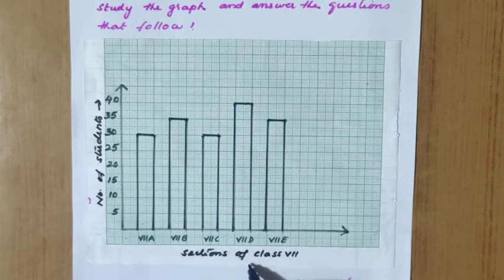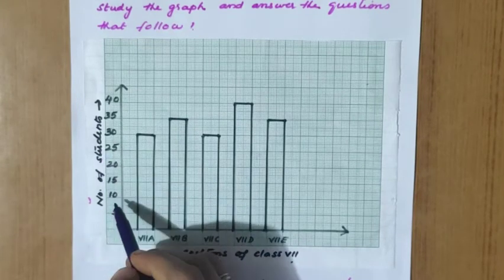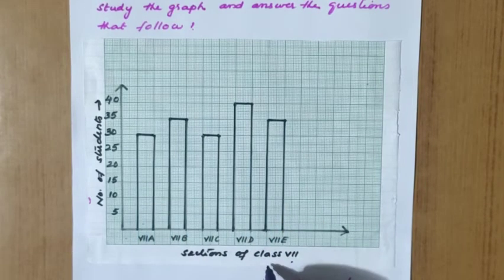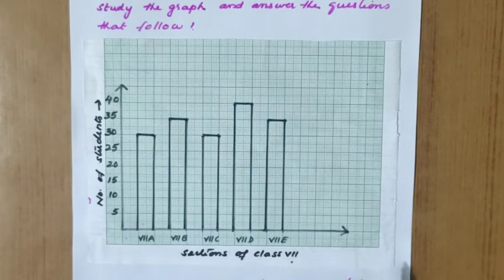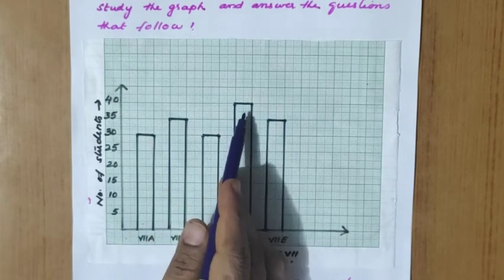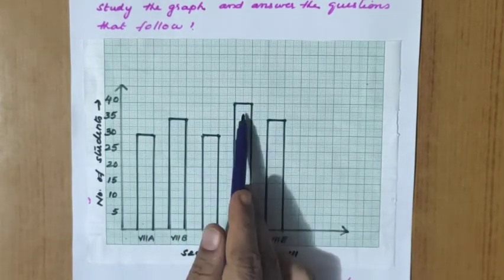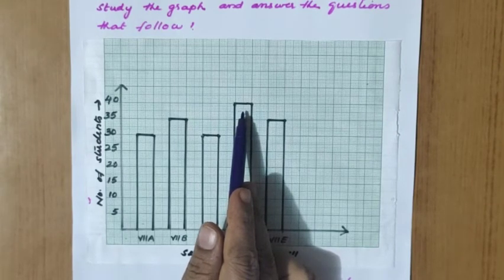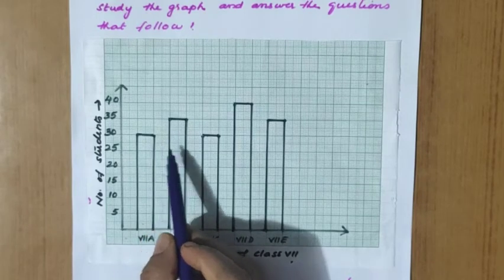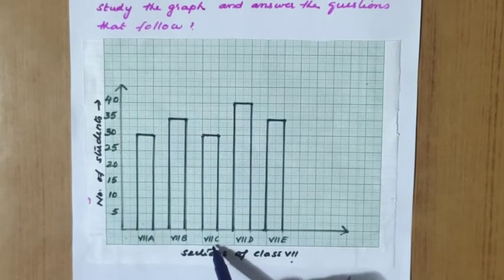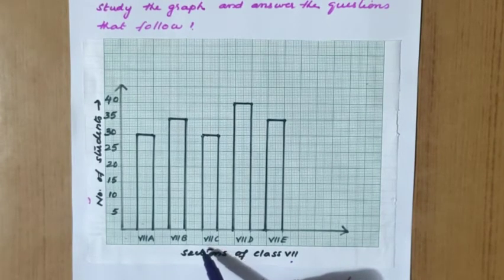The labels on the graph show sections of class 7 and number of students. The height of the bar shows the number of children. The maximum height bar is 7th D, so 7th D has the maximum number of children. The minimum is 30 children, shared by both 7th A and 7th C.